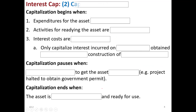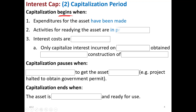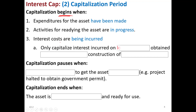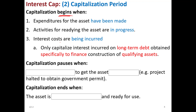The second component asks us to examine the capitalization period. Capitalization begins when expenditures for an asset have been made, activities for readying the asset are in progress, and interest costs are being incurred. You only want to capitalize interest incurred on long-term debt obtained specifically to finance the construction of qualifying assets — not bridge loans. Long-term debt means greater than one year, such as five-year bonds or a 10-year note payable with a bank.